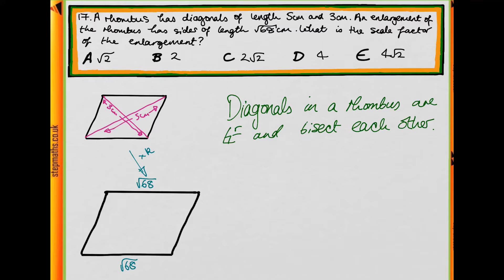So now we know this piece of information, what do you think we can use to try and work out this side length here? So we're going to try and find this side length. What bit of information do you know which links this side, this side and this side in a right-angled triangle?